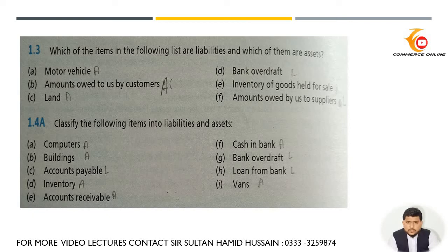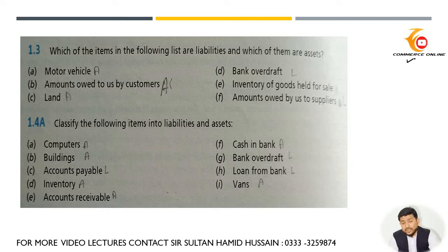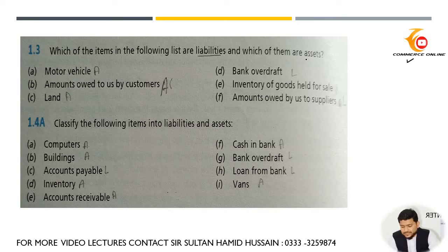Hello everyone, my name is Hamri Sen and welcome to my YouTube channel Commerce Online. In a previous video I have solved question number 1.3 and 1.4 from the Frankfurt business accounting book. In this video I'm going to solve question number 1.3 and 1.4 — it's a pretty simple question in which you are asked to list down liabilities and assets.